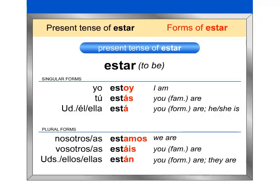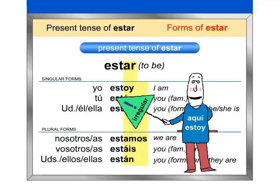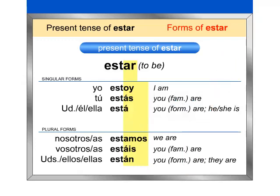Did you notice anything unusual about this AR verb? Here is a hint. Look at the endings. Although estar ends in AR, it does not follow the pattern of regular AR verbs. That's because estar is an irregular verb. The yo form, estoy, is irregular. In addition, all conjugated forms except yo, nosotros, and nosotras have an accent on the letter A.